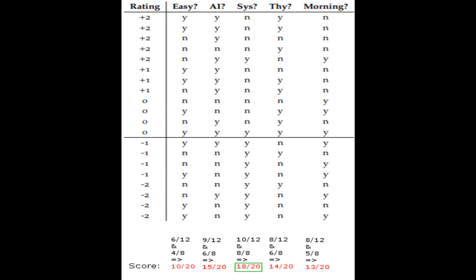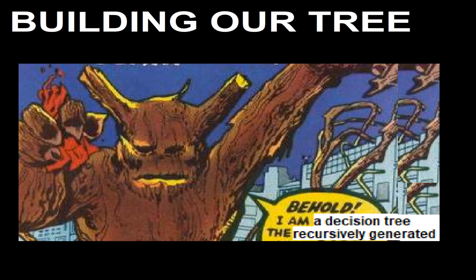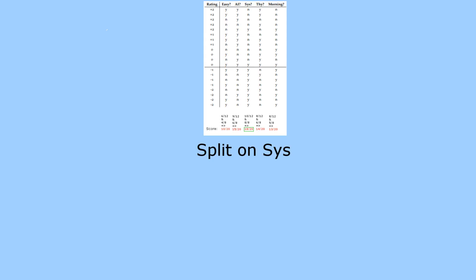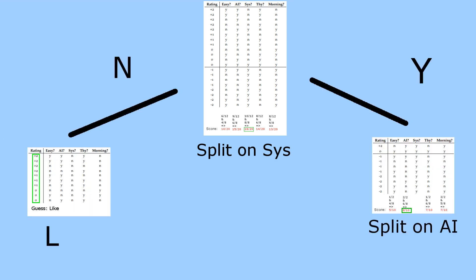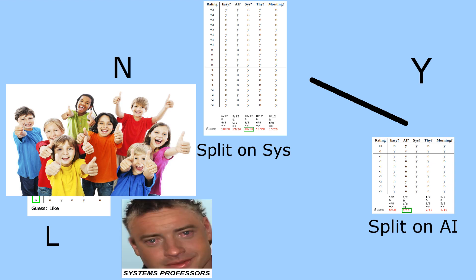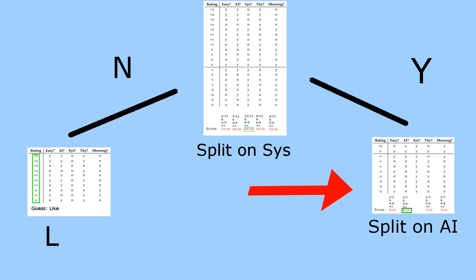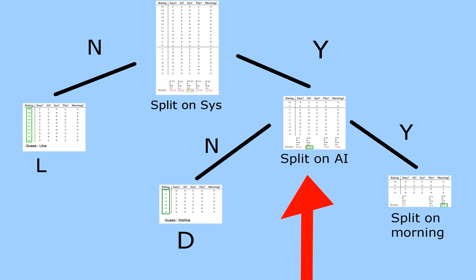Here are the scores for all columns — not surprisingly, systems gets the highest. We've got our first question to ask. Once we find the column with the highest score, we partition the data based on the answers: students who said no go left, students who said yes go right. Students who said a class was not a systems class unanimously liked it — that's our first base case. For the right partition there's no unanimous answer, so we find the new column with the highest score and split again. This time AI is the new highest-scoring column.